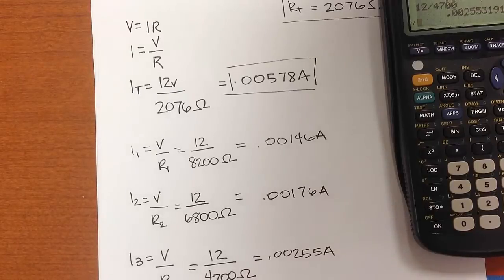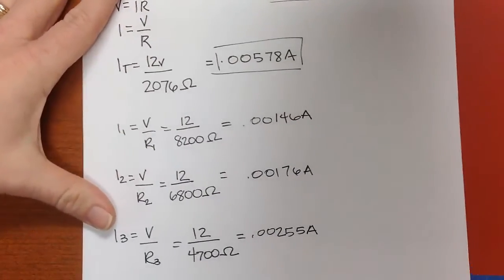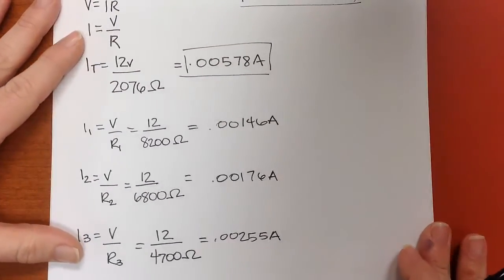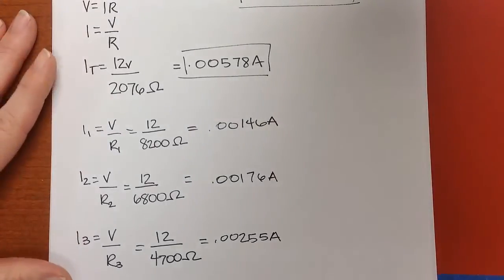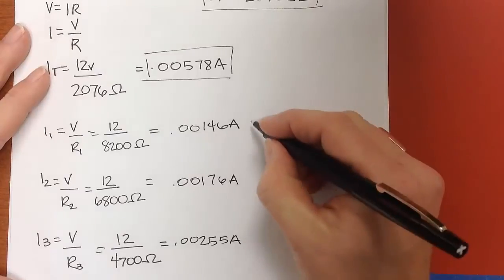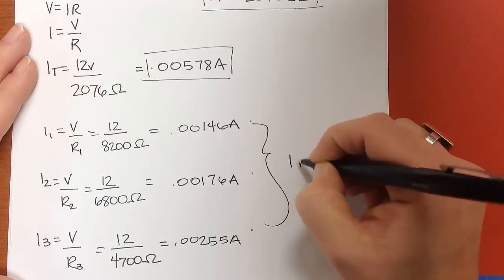So I have those individual numbers, and now what I would like to do is just double check my work. And so to double check my work, what I'd like to do is just add those up, because if I have everything done correctly, what I should see is that if I add this number, this number, and this number up, I should get IT.